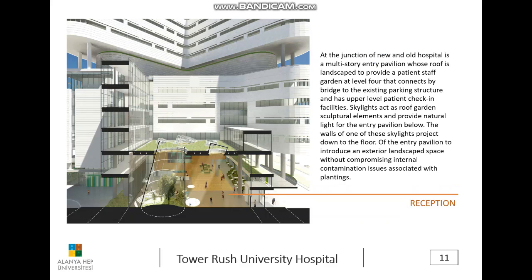At the junction of the new and old hospital is a multi-story entry pavilion whose roof is landscaped to provide a patient and staff garden at level 4, connecting by bridge to the existing parking structure, with upper-level patient check-in facilities. Skylights act as roof garden sculptural elements and provide natural light for the entry pavilion below. The wall of one of these skylights projects down to the floor of the entry pavilion to introduce an exterior landscaped space without compromising internal contamination issues associated with planting.